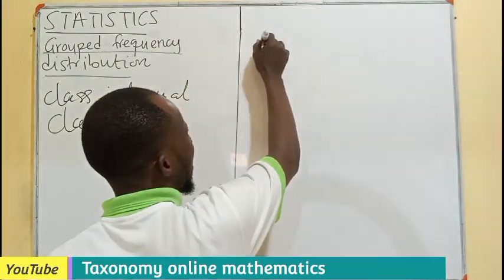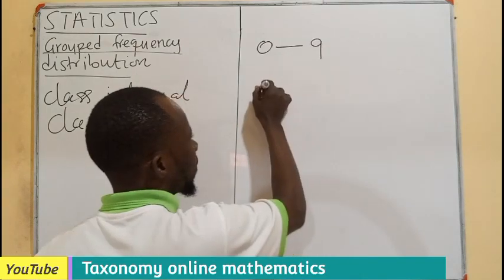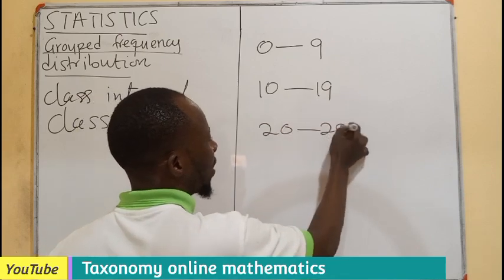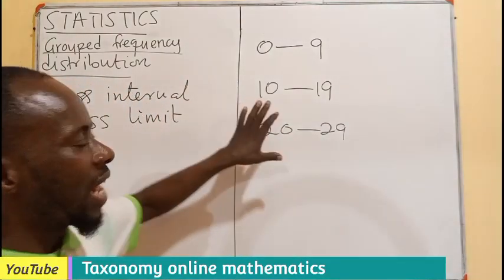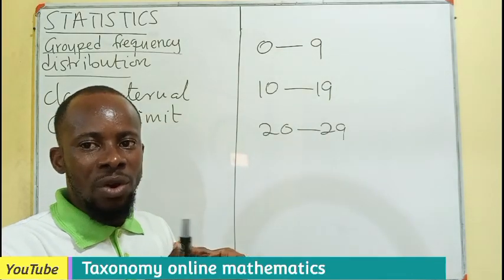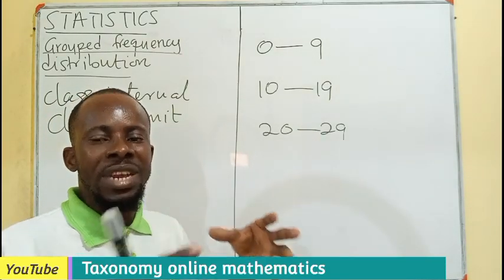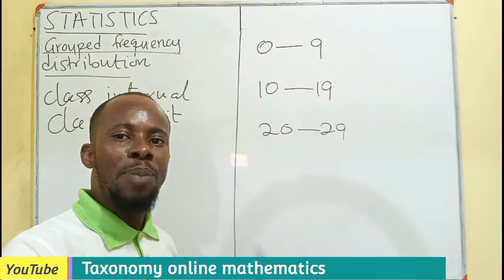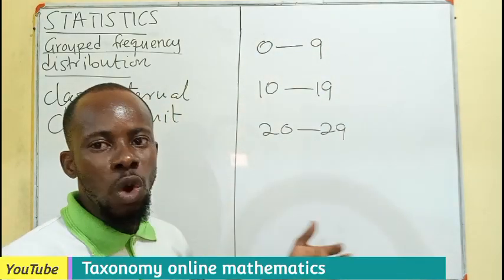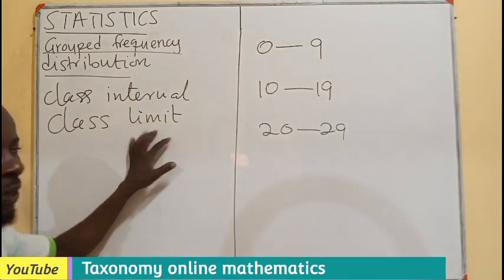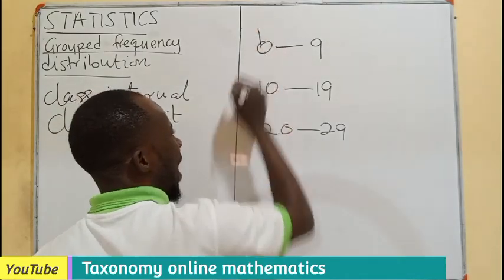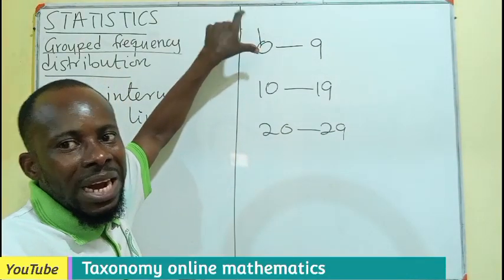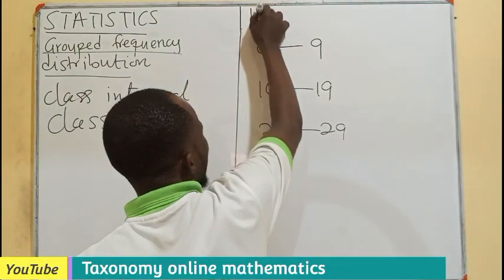The interval from 0 to 9, from 10 to 19, and 20 to 29 — this is an example of a class interval, which shows the width or breadth of the data. Or, better still, we can say it shows the difference between the upper class limit and the lower class limit. The beginning point is what you call the lower class limit.